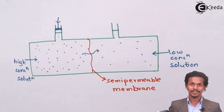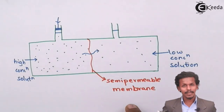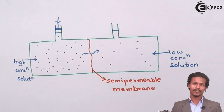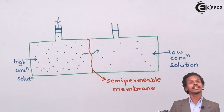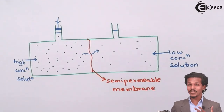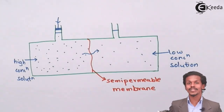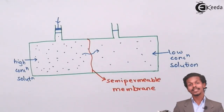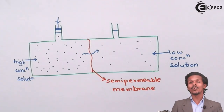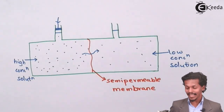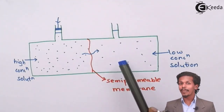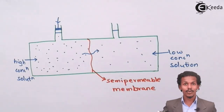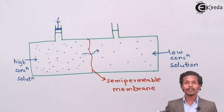The semi-permeable membrane can be made up of cellulose, animal bladder, or a copper ferrocyanide compound. This membrane allows only the solvent molecules to pass through it and not the solute. A solution has two components, and semi-permeable means it allows only one — the solvent — to pass through. The solute particles, as symbolized in the diagram, will not pass through the semi-permeable membrane; only the solvent molecules will.